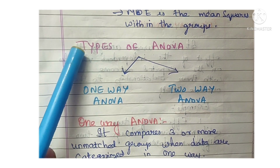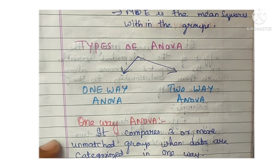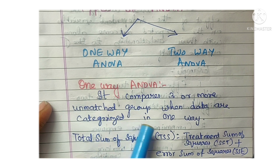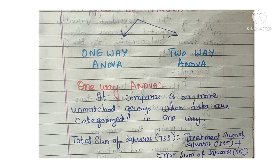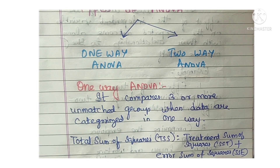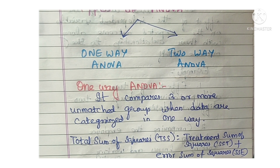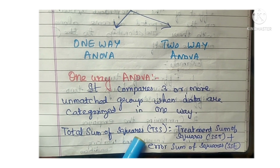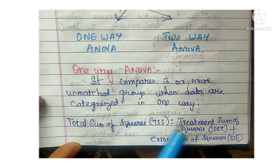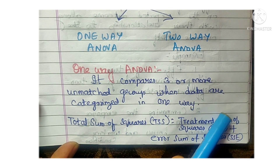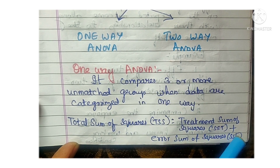There are two types of ANOVA: one-way ANOVA and two-way ANOVA. One-way ANOVA compares three or more unmatched groups when data are categorized in one way. In one-way ANOVA, the total sum of squares (TSS) equals the treatment sum of squares (SST) plus the error sum of squares (SSE).